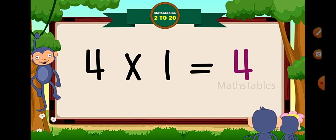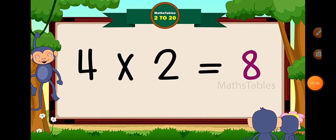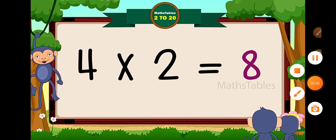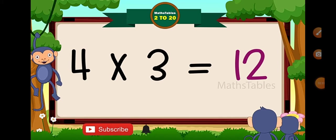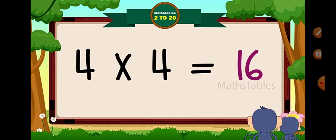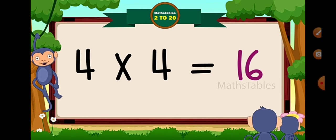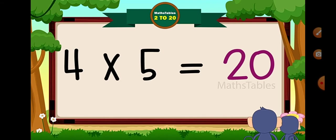What is 4 × 1 = ? 4. 4 × 2 = 8. 4 × 3 = 12. 4 × 4 = 16. 4 × 5 = 20.